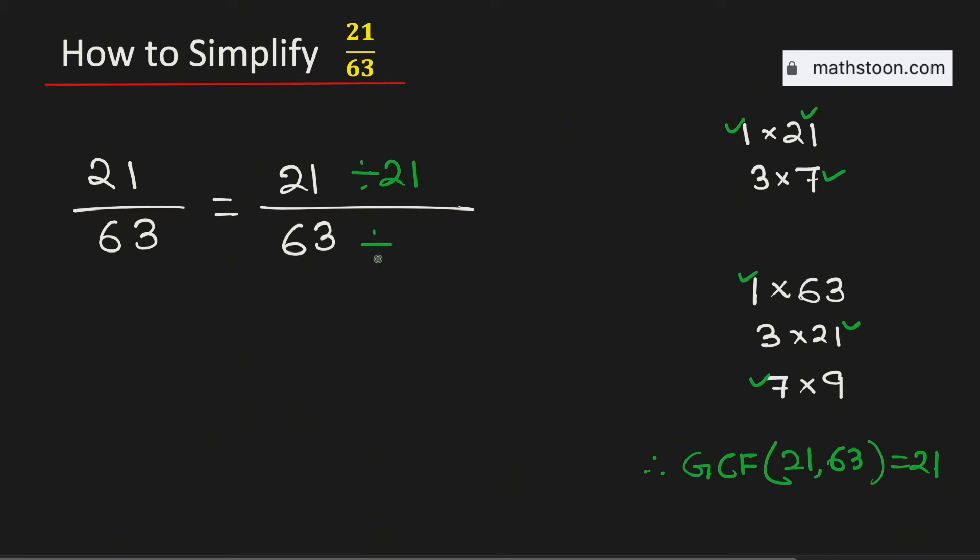And if we divide them by 21, we will get 1 over 3. Therefore, the fraction 21 over 63 simplified is equal to 1 over 3.